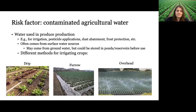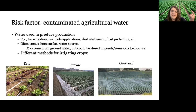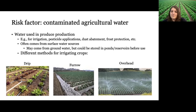A big risk factor is contaminated agricultural water. We say 'agricultural water' rather than 'irrigation water' because water can be used for purposes other than irrigation — including diluting pesticides, dust abatement, and frost protection. Sources include surface water (streams, rivers, ponds) and groundwater, which is underground but can still be pumped into ponds or reservoirs before use, potentially exposing it to the environment. Different irrigation methods carry different risks: drip irrigation, where water travels through tubing directly into soil, is probably lowest risk; furrow irrigation, which floods small canals between crops, is intermediate; and overhead irrigation, where water is sprayed onto crops, is probably highest risk because it contacts the most edible portions of produce.